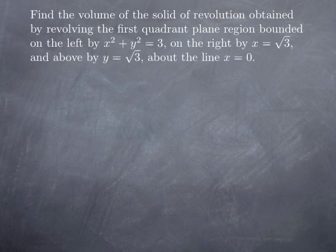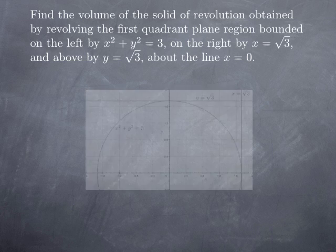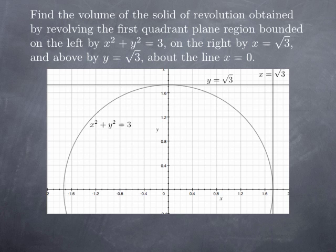One last example. We want to find the volume of the solid of revolution obtained by revolving the first-quadrant plane region bounded on the left by x squared plus y squared equals 3, on the right by x equals root 3, and above by y equals root 3, about the line x equals 0 — the y-axis. We draw the circle x squared plus y squared equals 3, centered at the origin with radius root 3. The lines x equals root 3 and y equals root 3 are tangent to that circle, and the region bounded on the left by the circle, on top by y equals root 3, and on the right by x equals root 3 is our region.